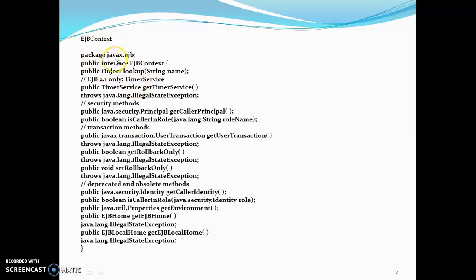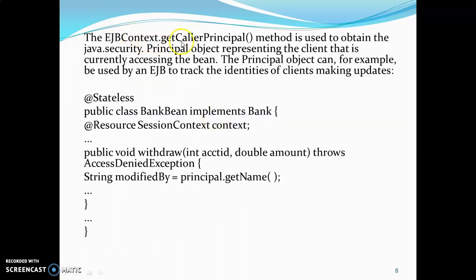The EJBContext interface in the javax.ejb package provides several methods: lookup for objects, getTimerService which returns the timer service, getCallerPrincipal, isCallerInRole, getUserTransaction, getRollbackOnly, setRollbackOnly, getCallerIdentity, getEnvironment, getEJBHome, and getEJBLocalHome. All these things can be retrieved through the EJBContext interface.